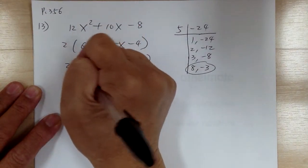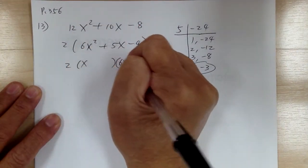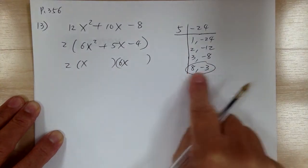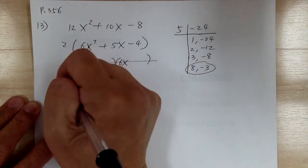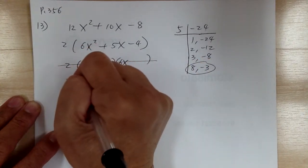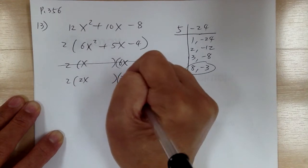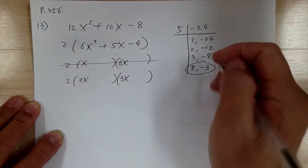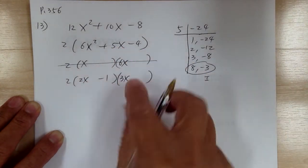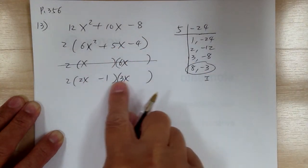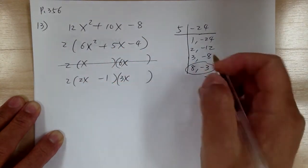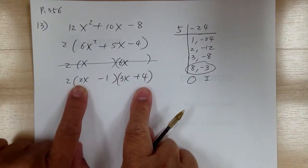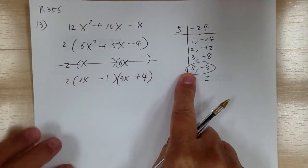If you try x and 6x, it's not going to work because 6 times something won't equal any one of those numbers. So go to the next one, try 2x and 3x. Take care of this first. This would be the inside, so minus 1. 3 times negative 1 gives you negative 3. The outside would be plus 4. 2 times 4 equals 8.